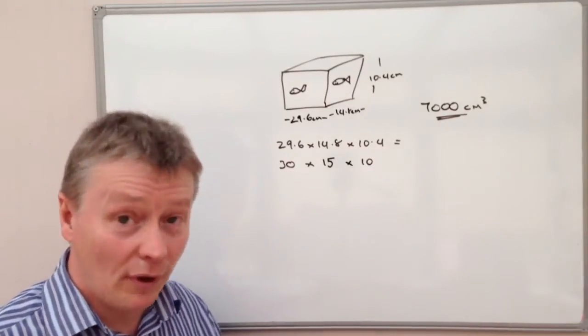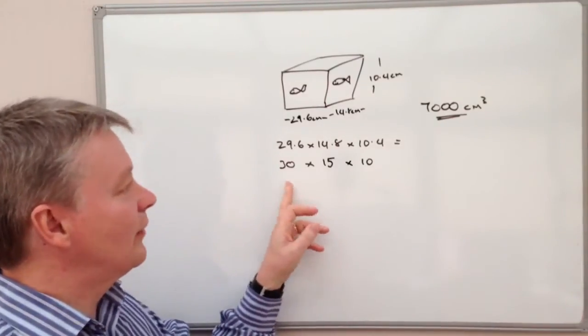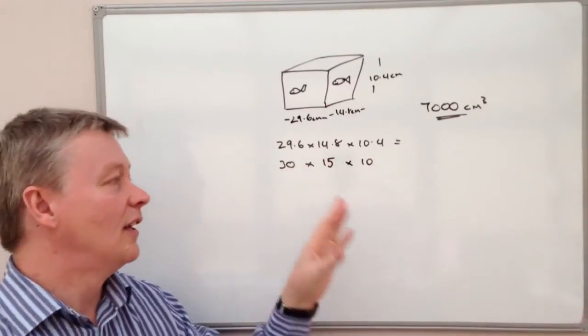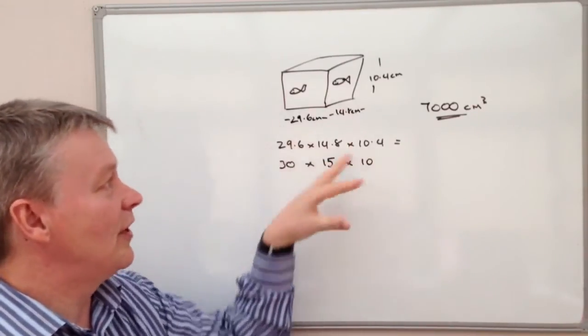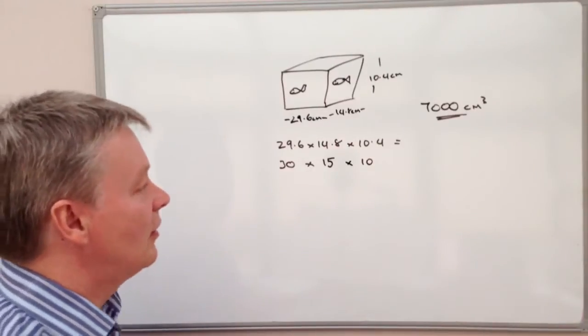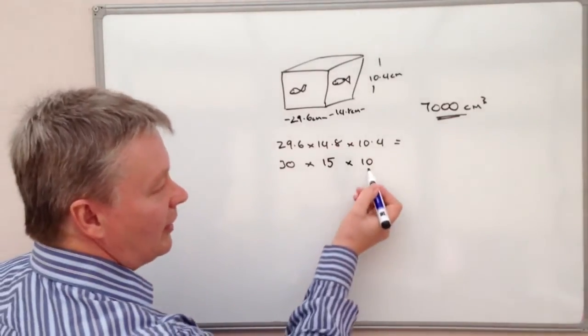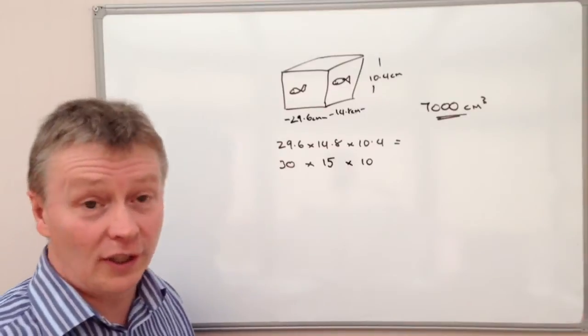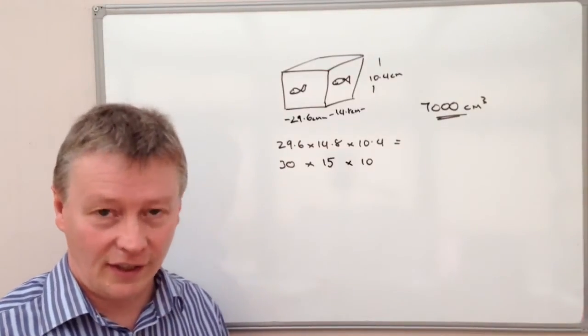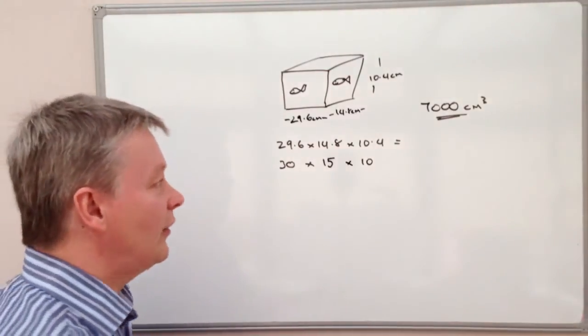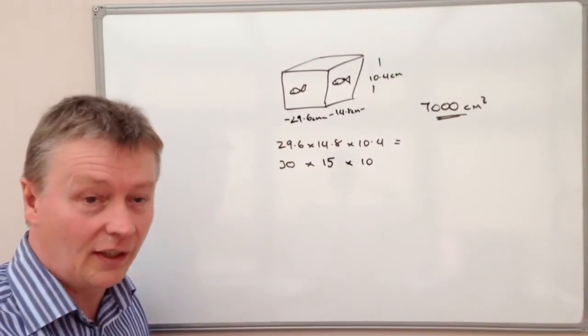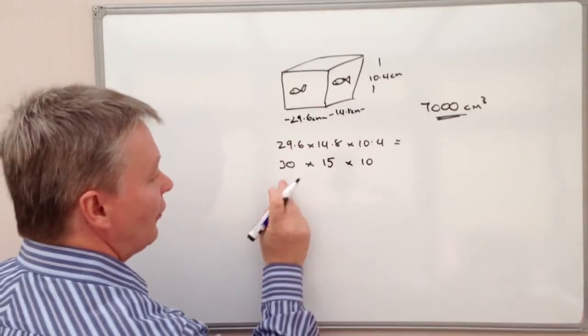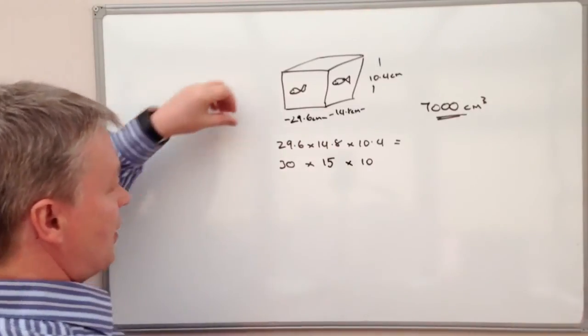So actually in terms of an approximation this is pretty good. 30 times 15 times 10 is going to be a fairly good approximation for this volume. In order to calculate that, well I know if I multiply by 10 all I do really is add a zero at the end of the calculation, so the only thing I'm going to concern myself with is 30 times 15. Well I know that if I just ignore the zero for the moment, I know that three times 15 is the same as 45.